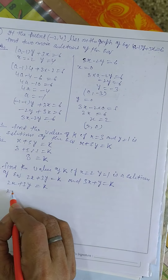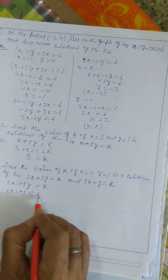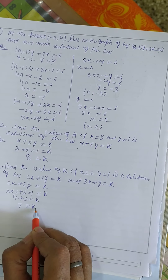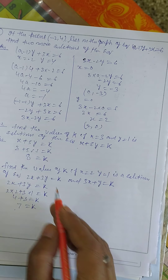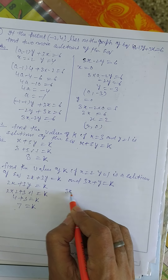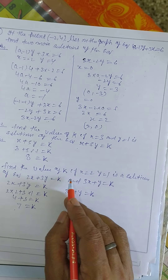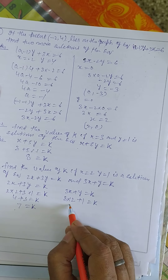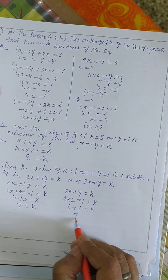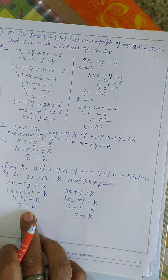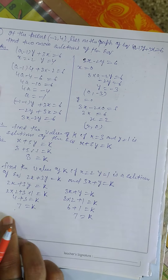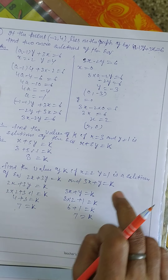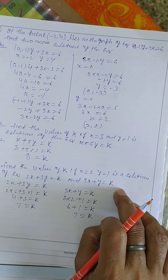Put x = 2, y = 1: 2(2) + 3(1) = k, so 4 + 3 = 7, k = 7. Now second equation: 3x + y = k, put x = 2, y = 1: 3(2) + 1 = 6 + 1 = 7, so k = 7 here too. Both give k = 7, so this point satisfies both equations.